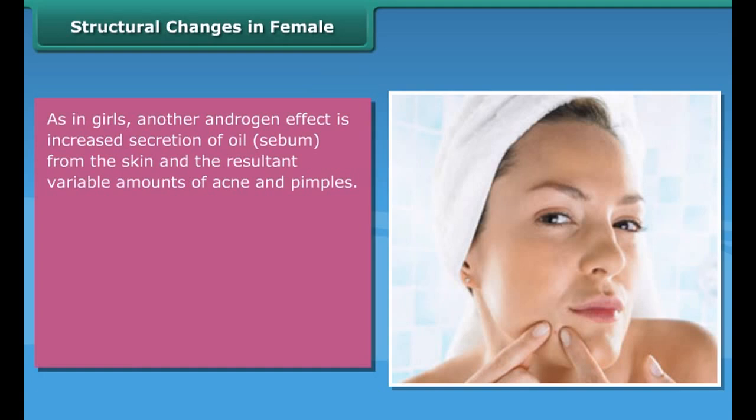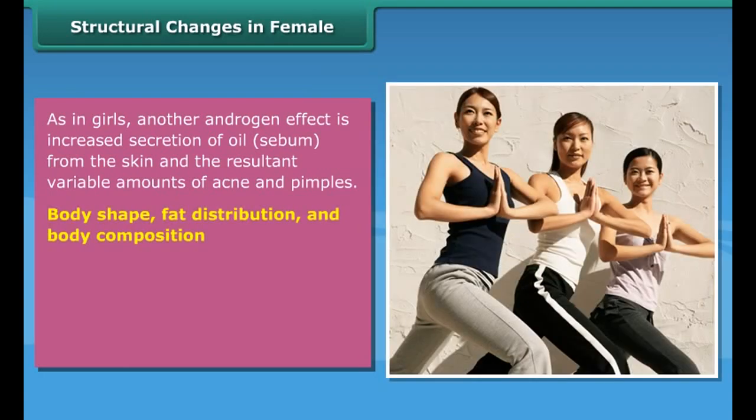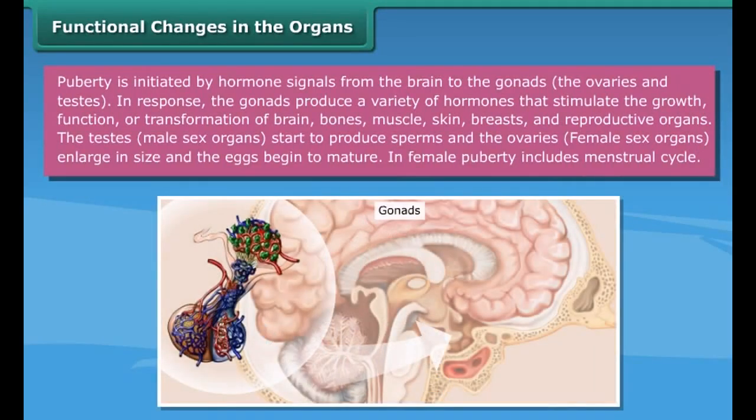Male musculature and body shape: Some bone growth — such as shoulder width and jaw — is disproportionately greater, resulting in noticeably different male and female skeletal shapes. Structural changes in females — changes in height: The girl begins her adolescent growth spurt at an average of about 10 years and grows at peak velocity at about 12 years, attaining her adult height at about 16 years.